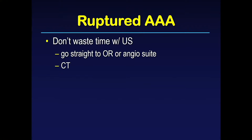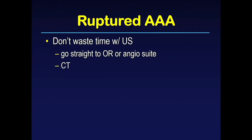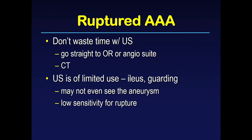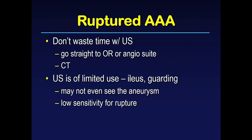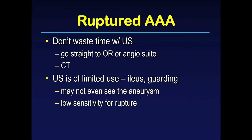The general consensus is that if one clinically suspects a ruptured triple-A, you probably shouldn't waste time getting an ultrasound — the patient should go directly to the operating room or angio suite, possibly stopping briefly for a CT scan. Ultrasound in the acute situation is of limited use. When a patient bleeds into their belly, hemoperitoneum causes peritoneal irritation resulting in ileus and guarding, and due to tensing of the abdominal musculature and bowel gas shadowing, you may not even see the aneurysm and have low sensitivity for detecting rupture.